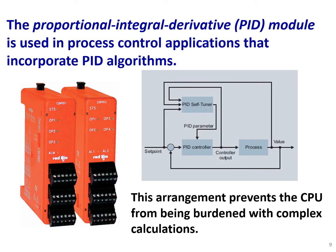The proportional-integral-derivative, or PID, module is used in process control applications that incorporate PID algorithms. It is a specific type of output module. This arrangement prevents the CPU from being burdened with complex calculations.